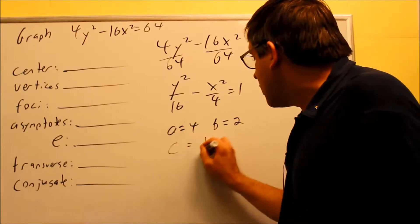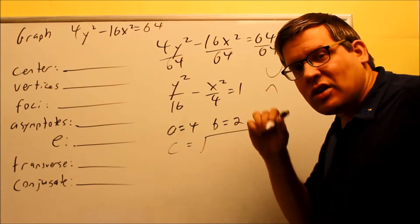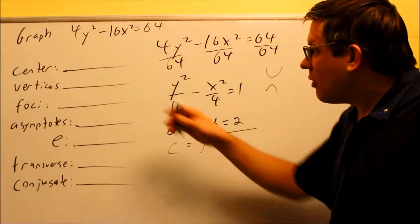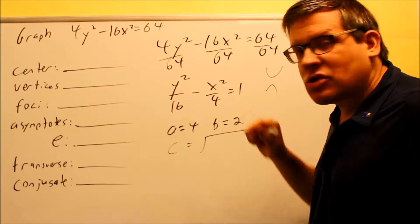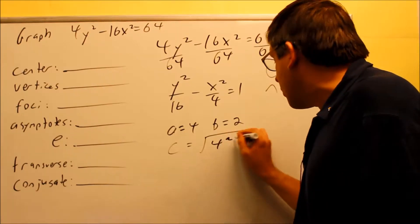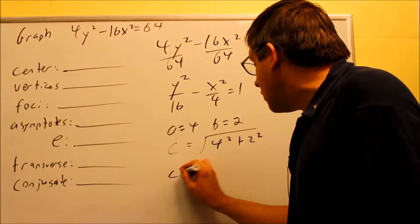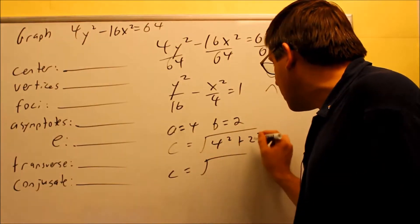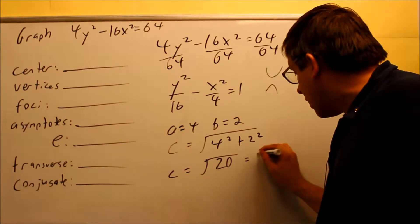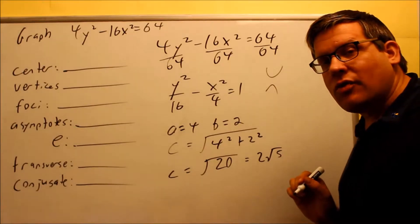We want to find our c value. As I mentioned before in the previous video, the formula for c always has a squared and b squared, but the sign inside is always opposite the one in the formula, so we have a minus sign there, so it means we're going to have a plus inside the formula for c. So we have 4 squared plus 2 squared, and then you get 16 plus 4 is the square root of 20, and square root of 20 we can break that up into 2 square root of 5. That's going to be our c value this time.